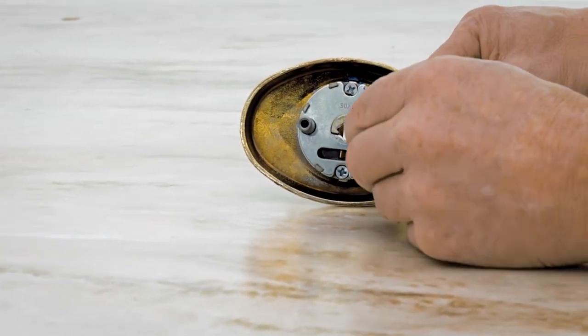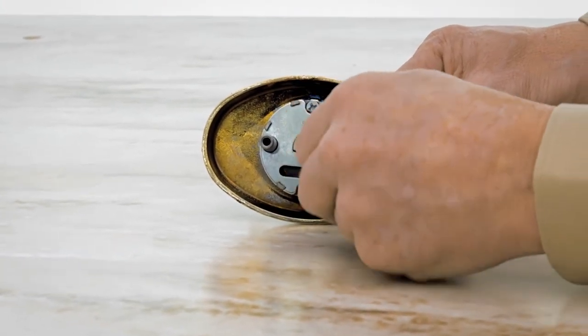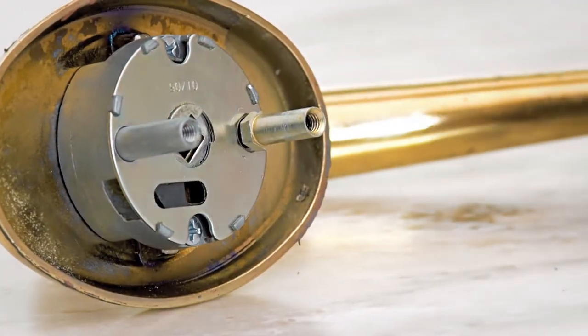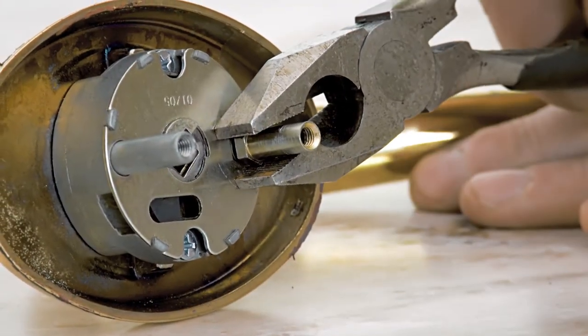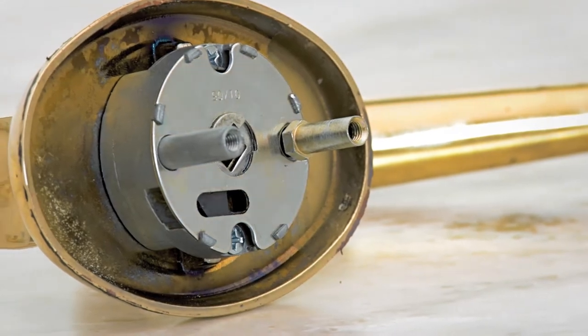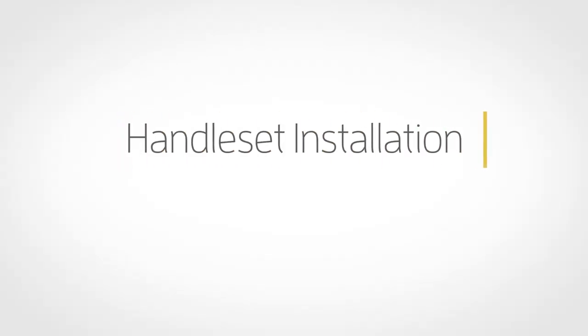Screw the lower post into the threaded hole at the bottom of the thumb lift cartridge and tighten. To finish the installation, we will be using the escutcheon product.